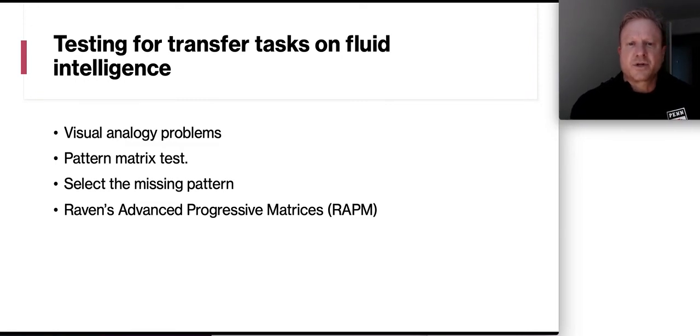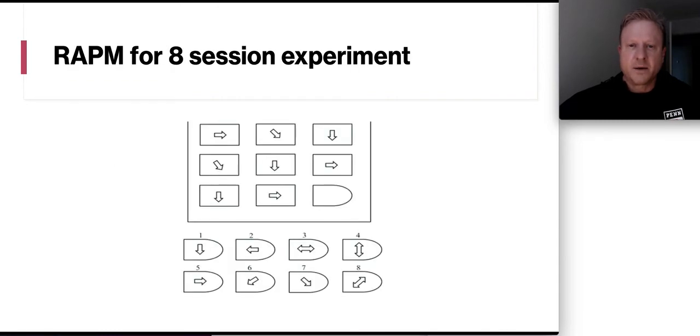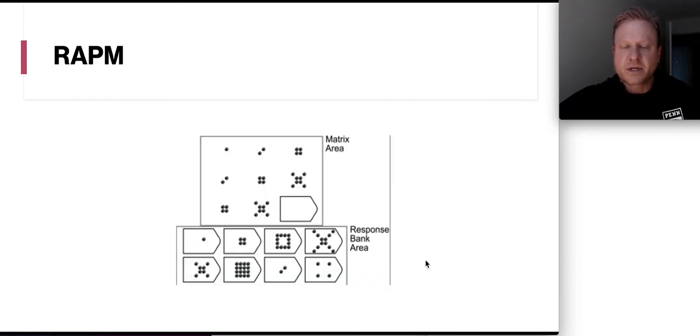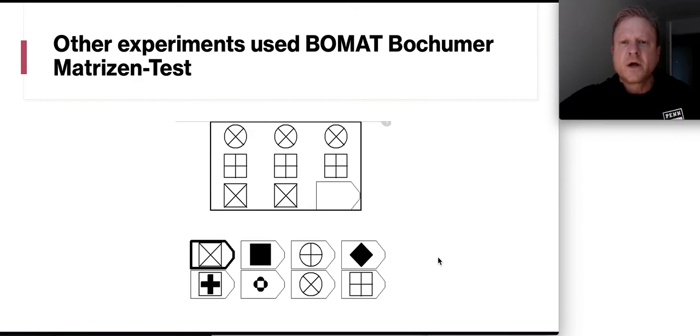So the testing for transfer tasks on fluid intelligence, that's looking at visual analogy problems. It's a pattern matrix test that was actually developed in the 1930s. And you try to select the missing pattern. It's called the Ravens Advanced Progressive Matrices, R-A-P-M. And this is what it looks like. So this is the exam. And then from here, you have to figure out what's missing. So you have to choose from between one and eight and pop it in there. This is another way to take a look at that same exam that you get this missing block and you have to go into the response bank and fill in the blank one. Now, other experiments were using BOMAT, which is the Boshimer Matrizin test. It's a similar idea, just a different test, different visuals.